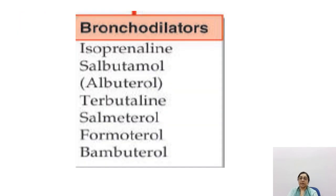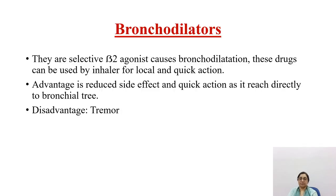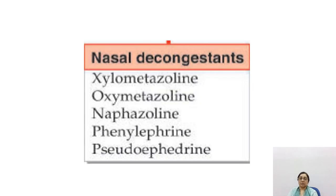Bronchodilators: isoprenaline acts on both beta-1 and beta-2 receptors. Salbutamol is a selective beta-2 agonist and also acts on beta-2 receptors, causing bronchodilation. These drugs can be used by inhaler for local and quick action, with the advantage of reduced side effects and quick action as the drug reaches directly to the bronchial tree. Disadvantage: only topical effect.